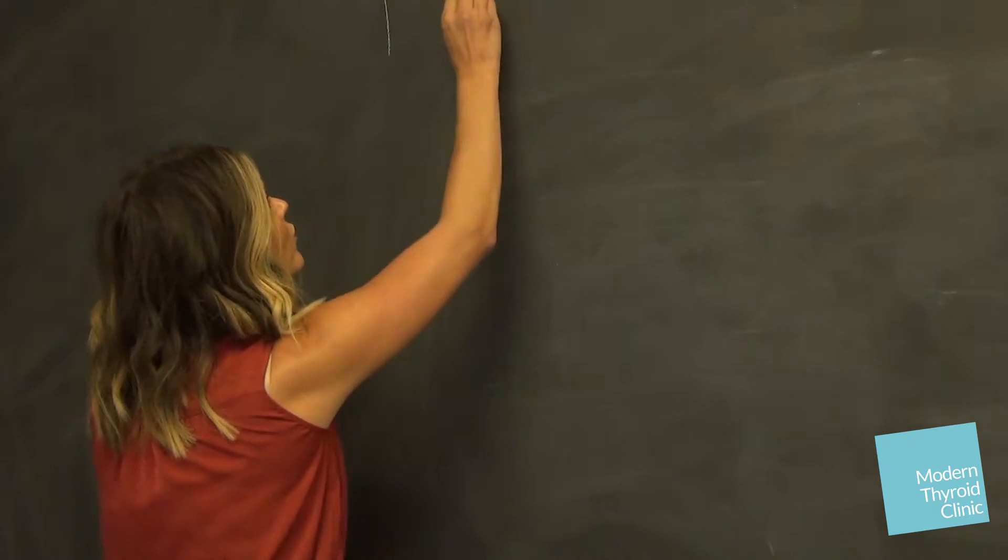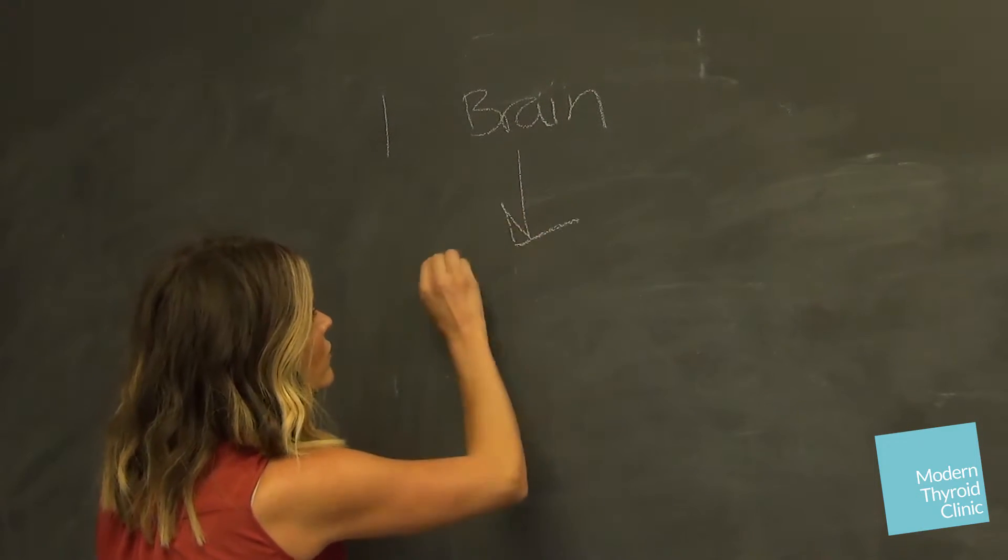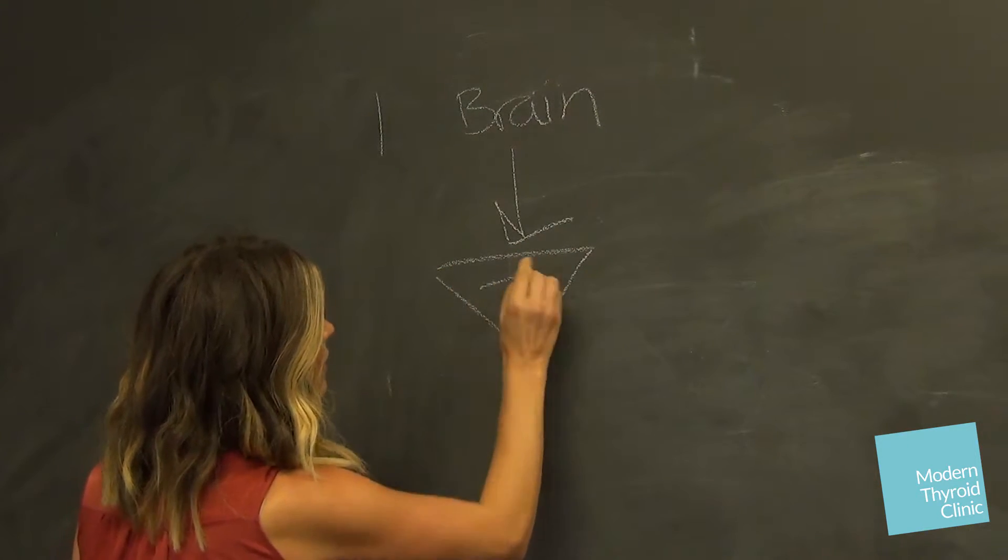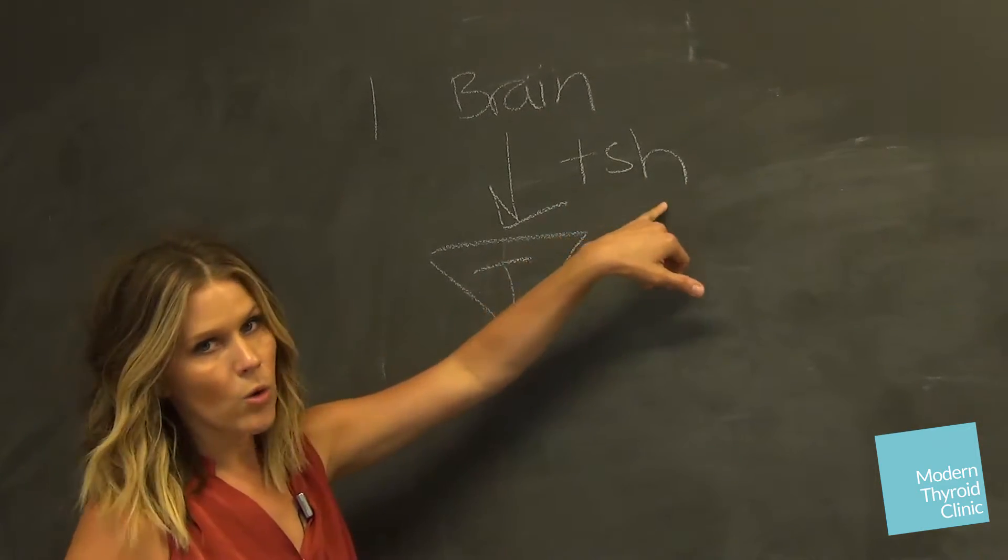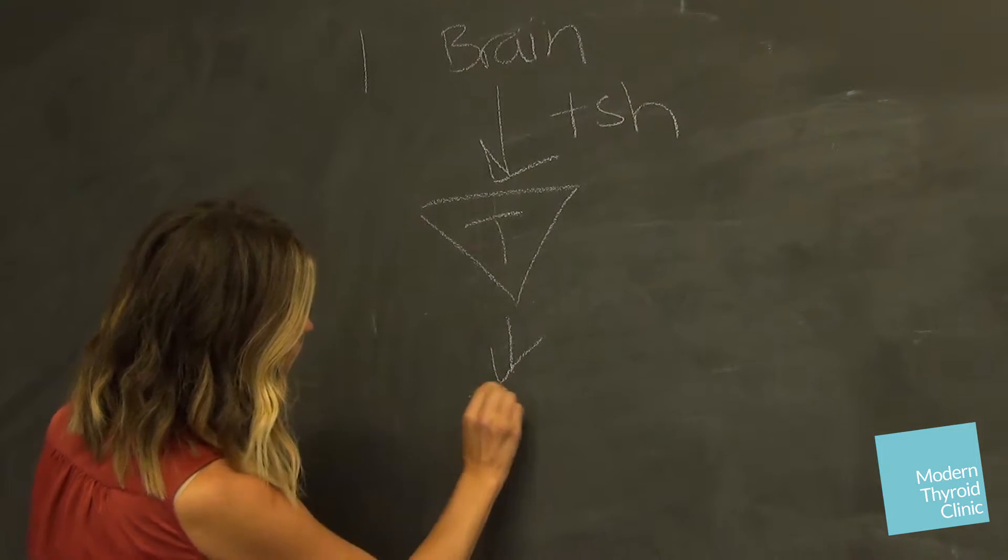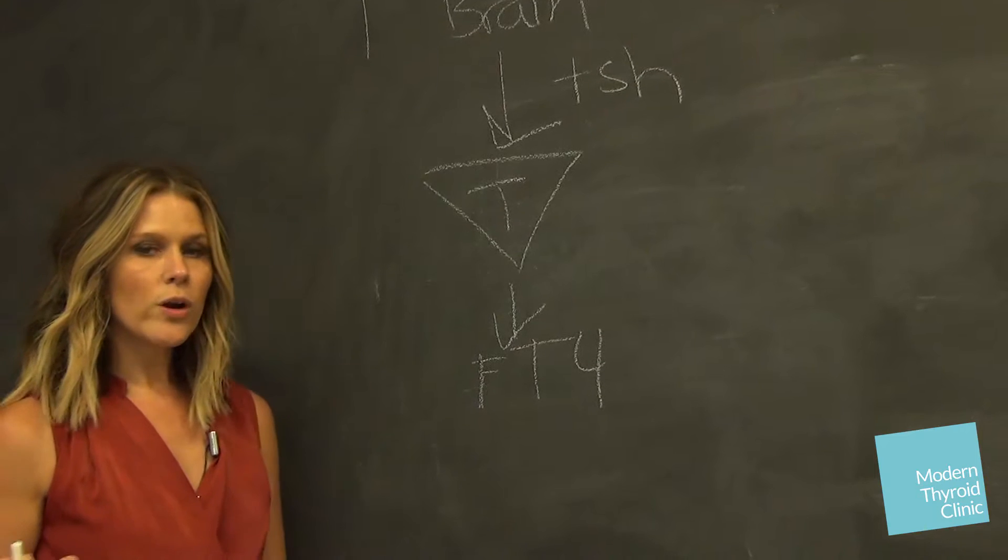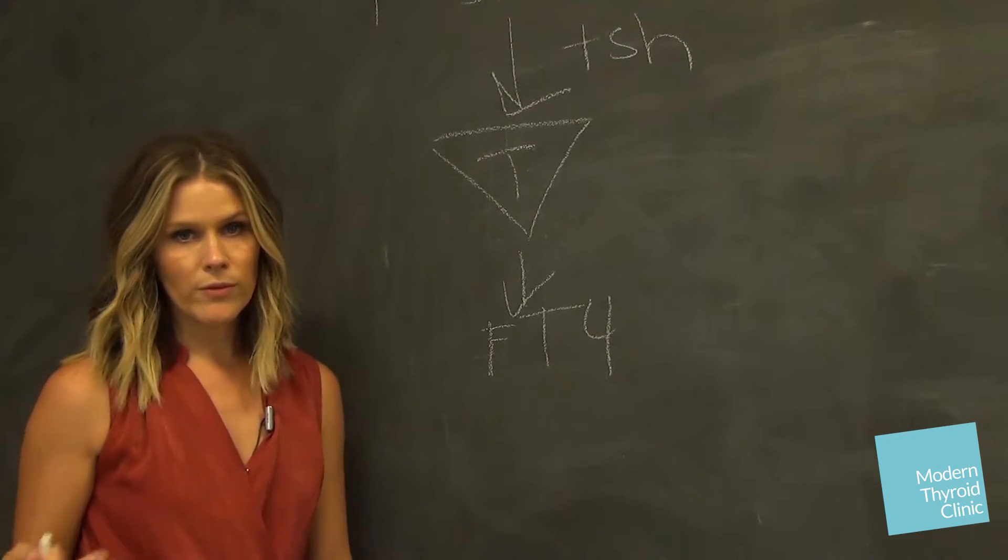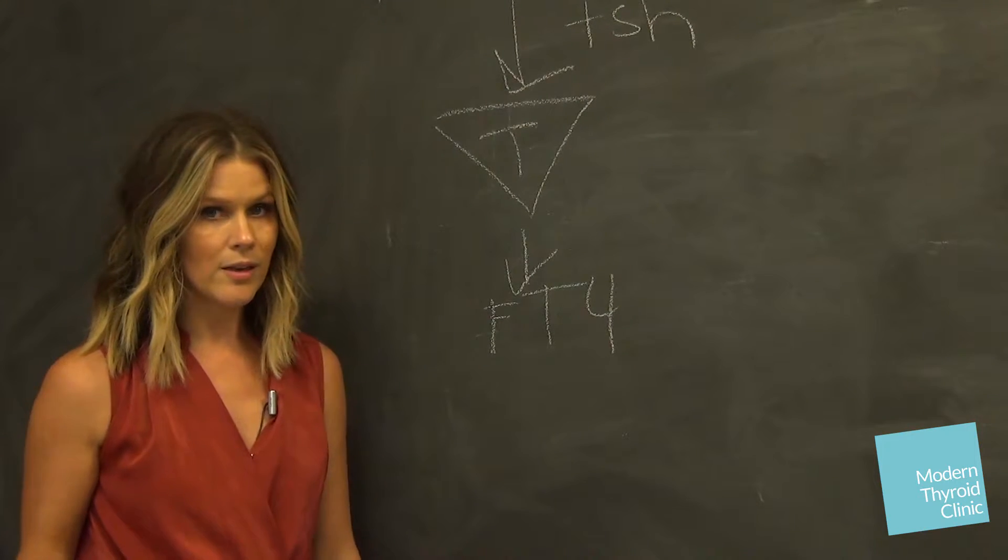So to start, your brain sends a message to your thyroid by way of TSH, thyroid stimulating hormone that stimulates your thyroid, and your thyroid secretes a hormone called free T4. Free T4 is an inactive form of thyroid hormone. It does not impact how you feel at all, and it's what I call conversion dependent.